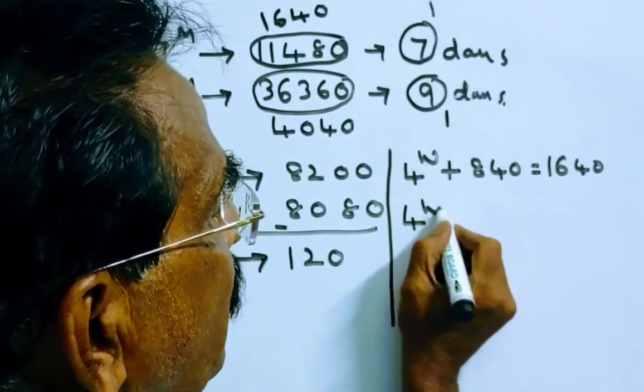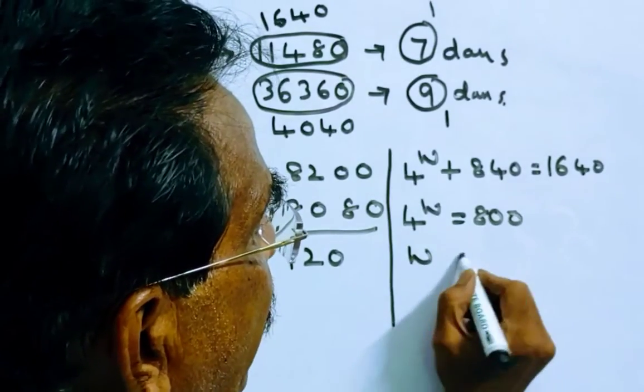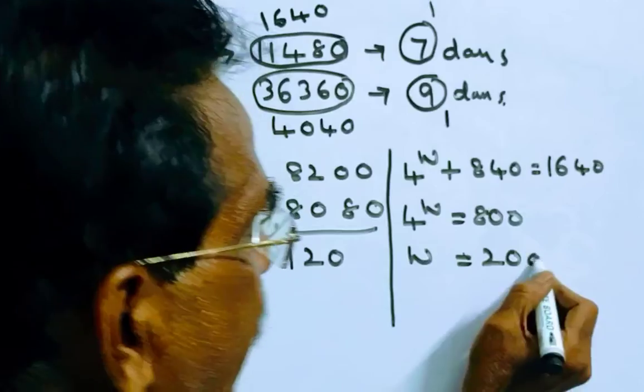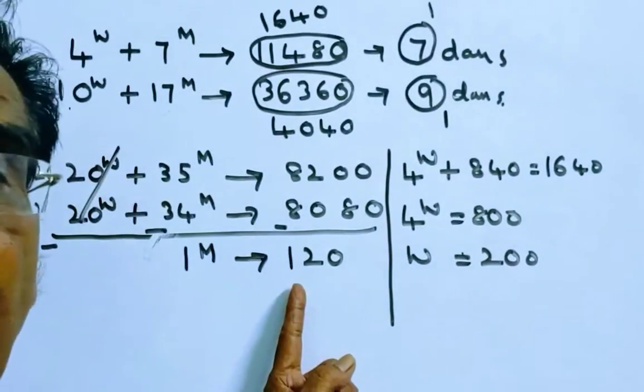So four women is equal to 800. So women earn 200 per day. This is the wages of women. This is the wages of men.